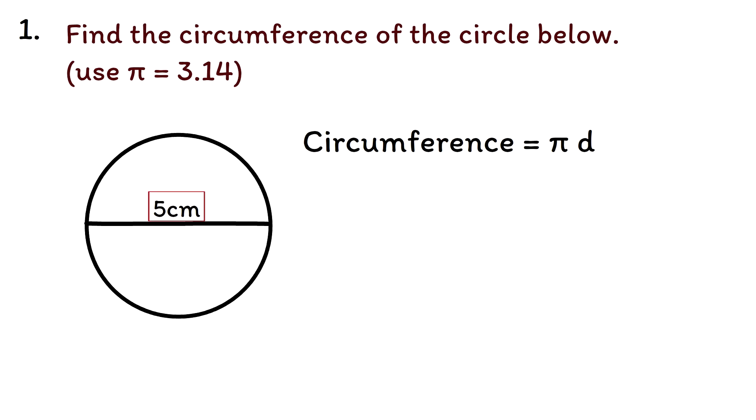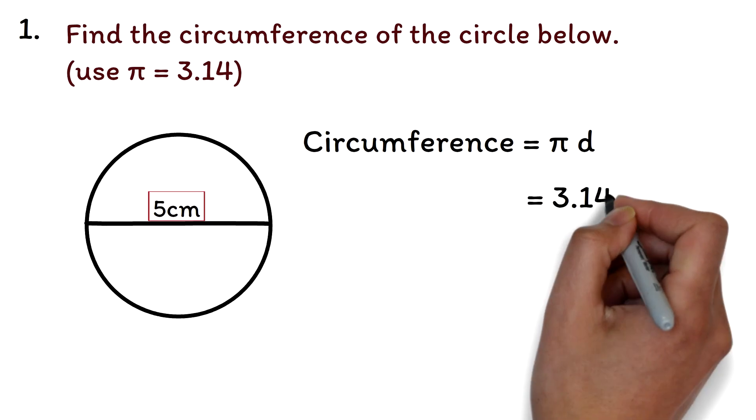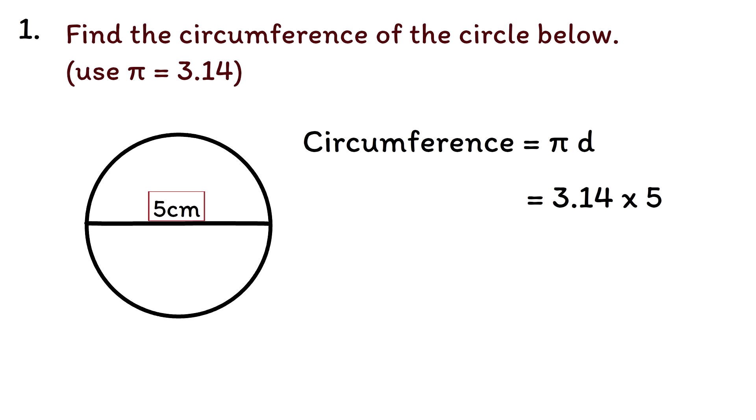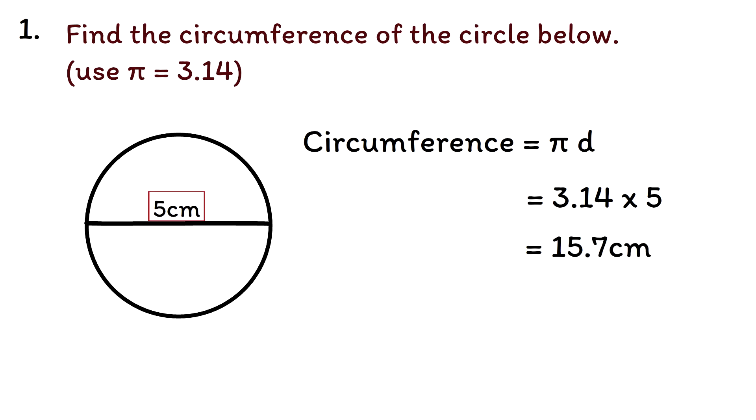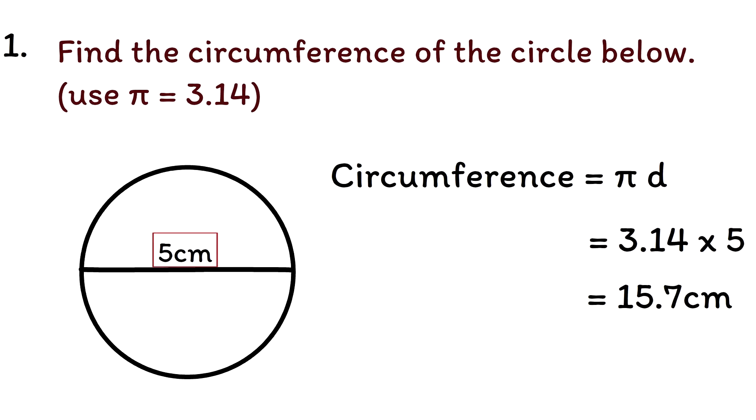Circumference equals pi, which has been given as 3.14 times 5, which is the diameter. We multiply to get our circumference as 15.7 centimeters. Most students get questions like this wrong only because they don't know the formula is on the GED formula sheet.